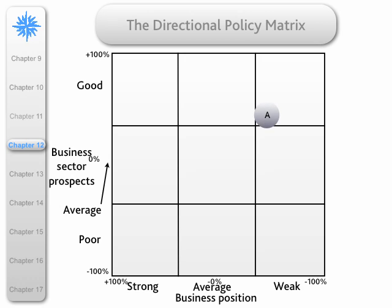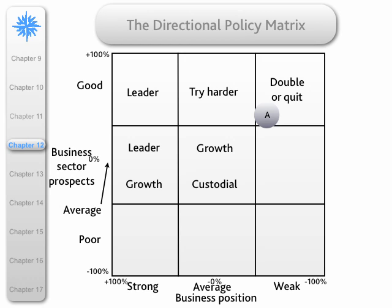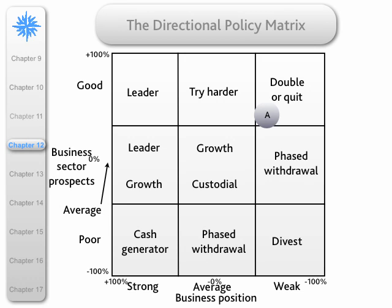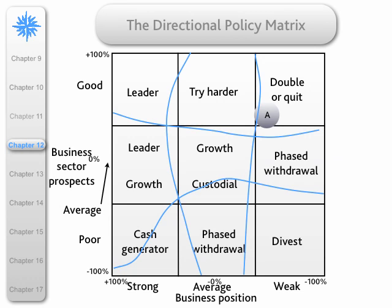We can take this further: each of the nine squares represents a strategy that should be followed. These are double or quit, try harder, leader, leader/growth, growth/custodial, phased withdrawal, cash generator, phased withdrawal, and divest. You should be able to see that double or quit, leader, cash generator, and divest correspond to problem child, star, cash cow, and dog in BCG. Furthermore, it's suggested that these boundary lines are too straight — it's softer than that, these are areas rather than clearly defined shapes, so we need to be quite flexible in our interpretation.